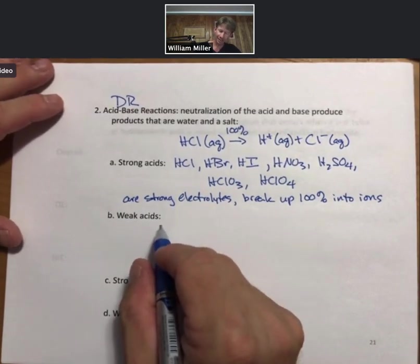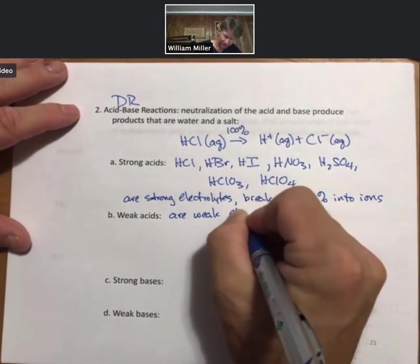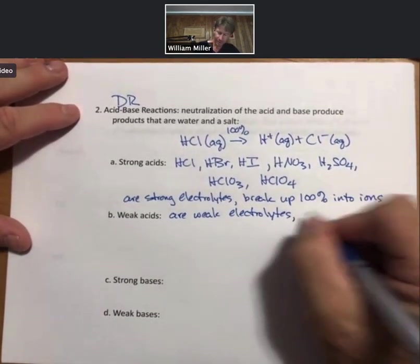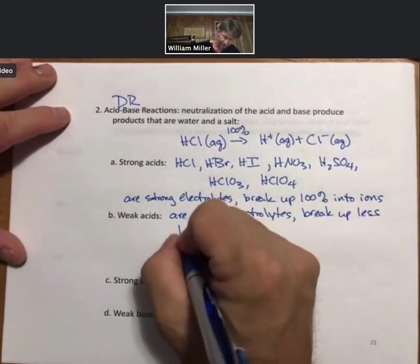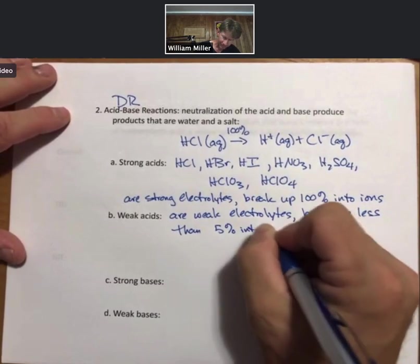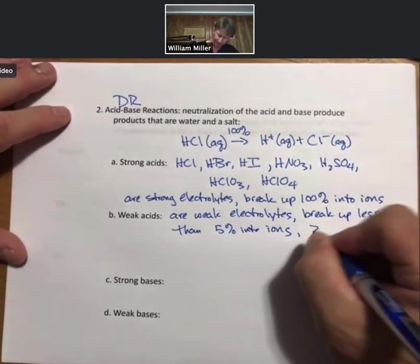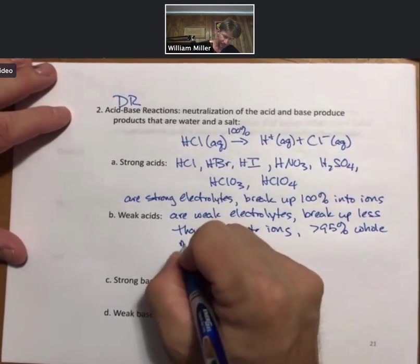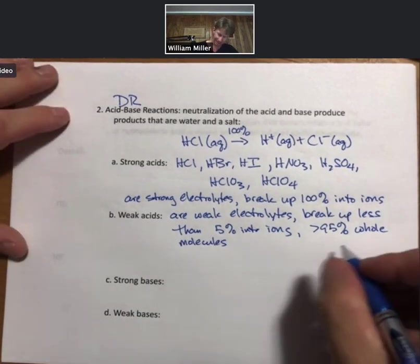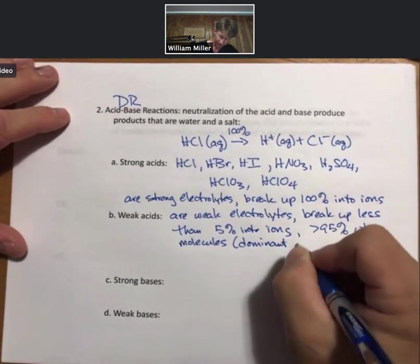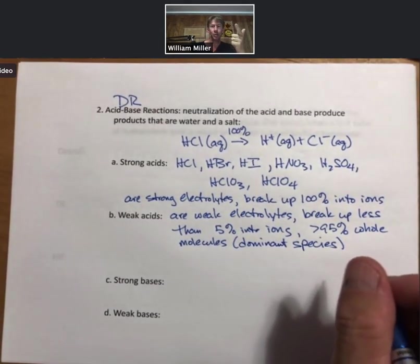Weak acids. We said that weak acids break up less than 5%. So weak acids are weak electrolytes. Break up less than 5% into ions. And therefore are more than 95%, greater than 95% whole molecules. And so what we call the 95% part is the dominant species. And when we write total ionic and net ionic equations we will write the dominant species.